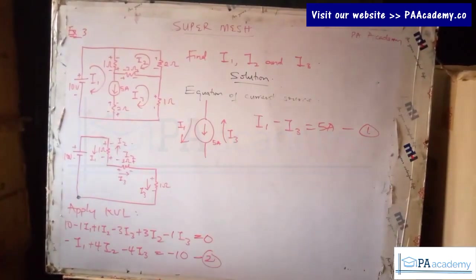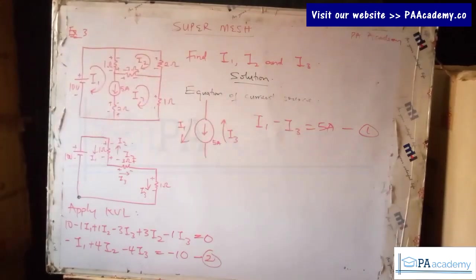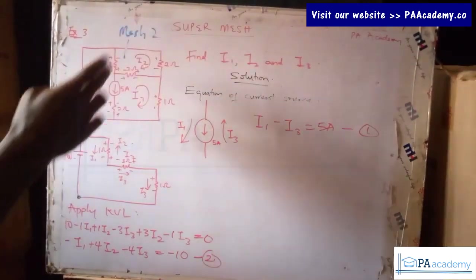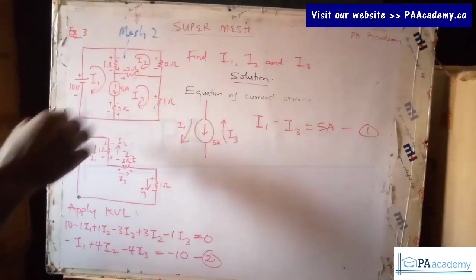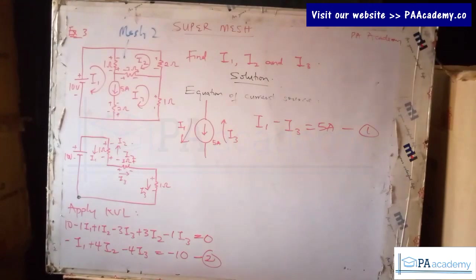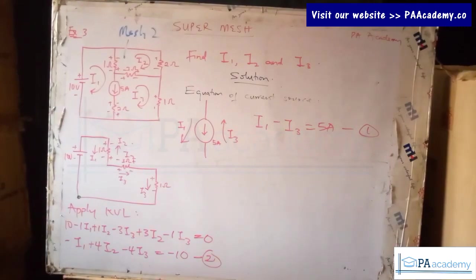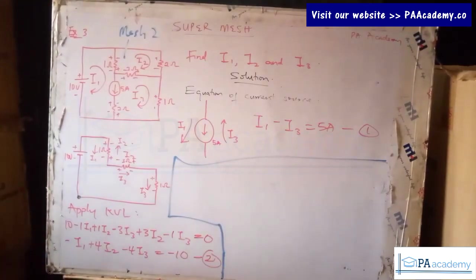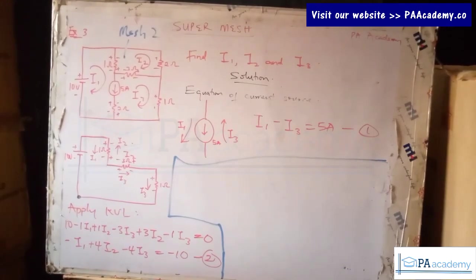We now have equation one and equation two. Let's go ahead and solve the third mesh — let's call this mesh two, since two currents pass through it. Let's apply KVL to mesh two as well. We've been able to simplify the super mesh circuit; now let's apply KVL to this remaining mesh.